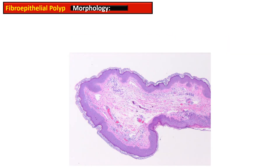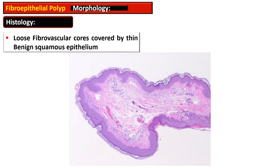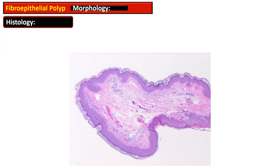On histology, the fibroepithelial polyp is characterized by a loose fibrovascular core, which in this particular case is slightly inflamed and is covered by a thin benign squamous epithelium.